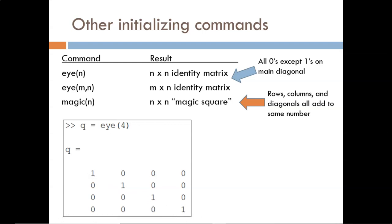The other command, magic, is a fun one. It creates a magic square, which is a matrix in which each of the rows, columns, and diagonals sum to the same number. In this 3x3 example, they all add to 15.